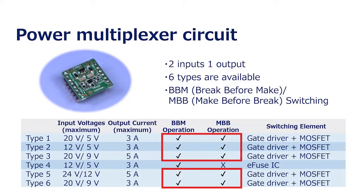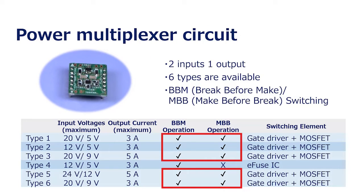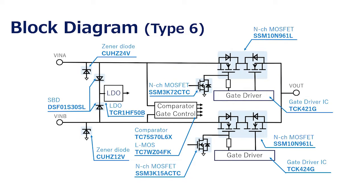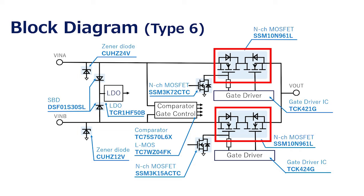Out of these, 5 circuits with the gate driver can switch between BBM and MBB operation. The block diagram of one of the power multiplexers, for example type 6, is shown here. A common drain MOSFET SSM10N961L is used for the switching operation of each input A and input B.